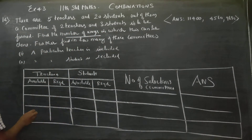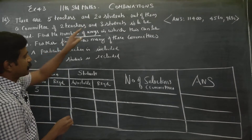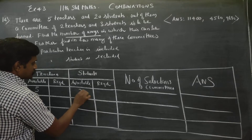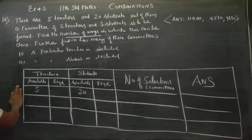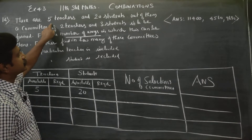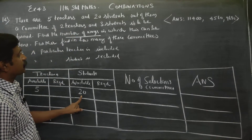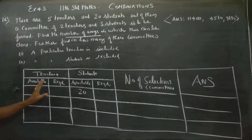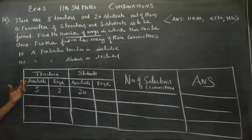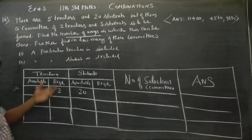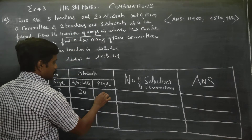How many teachers are available? 5 teachers are available. How many students are available? 20 students are available. Out of 5 teachers, 2 teachers are required. Out of 20 students, I have to choose 3 students. Order is not very important here.